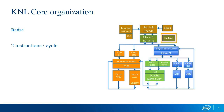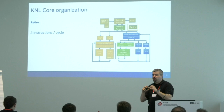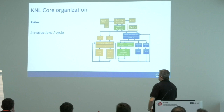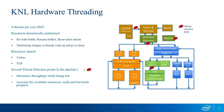The retire stage takes what the processor has rearranged and materializes the effects in the memory system as intended. This undoes the out-of-order optimizations and presents results in order. We can retire two instructions per cycle.